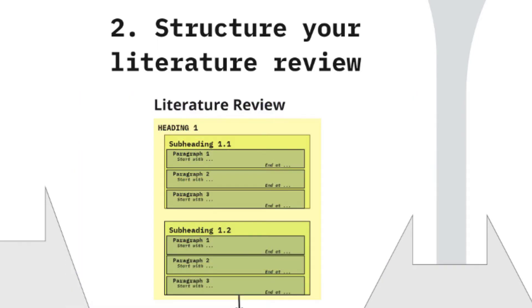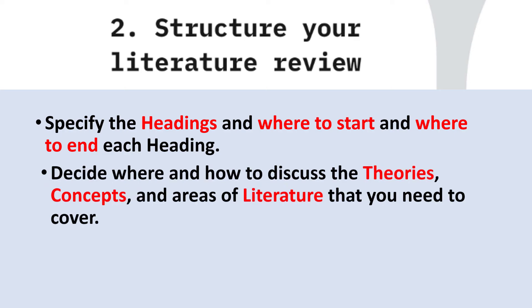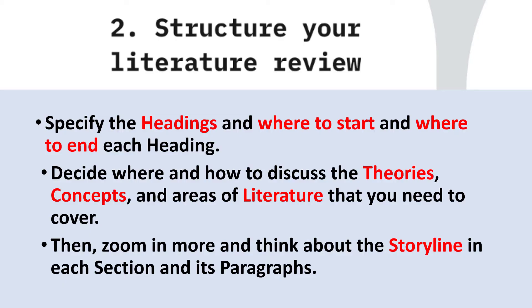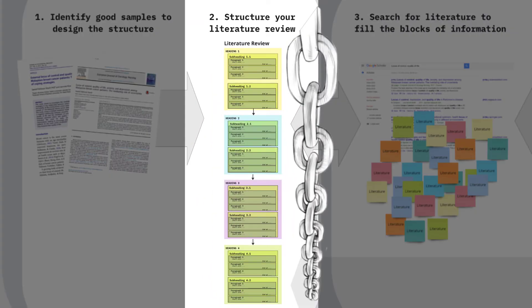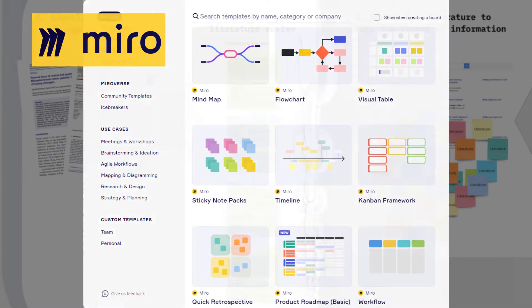At this step, you need to specify the headings you want to consider in your literature review chapter, where you want to start, and where to end each heading. You need to decide where and how to discuss the theories, concepts, and areas of literature that you need to cover. Then zoom in more and think about the storyline in each section and its paragraphs. Look at your literature review like a chain of blocks of information and decide what each block aims to cover, ensuring these blocks are joined and linked to have a nice flow of writing. You can use mind mapping software like Miro to structure your literature review.